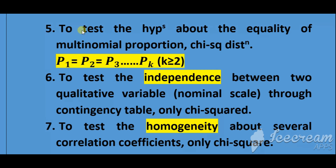Another use of chi-square distribution is to test the hypothesis about the equality of multinomial proportions. For this purpose, we use only chi-square distribution.